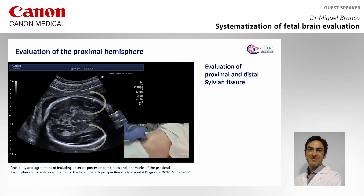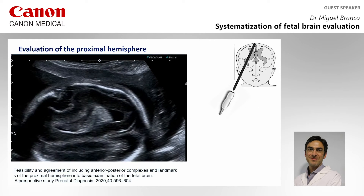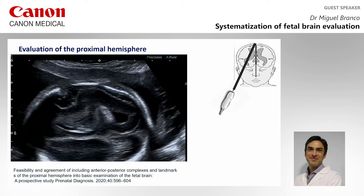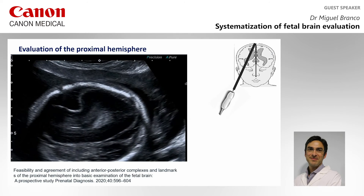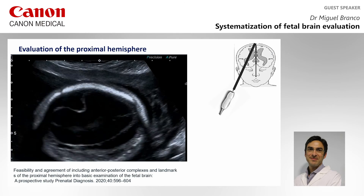The sylvian fissure opercularization is closely related with gestational age and is a useful tool for screening pathology of cortical malformation. If we tilt the probe to the fetal shoulder, we can also evaluate the proximal parenchyma and ventricular wall.